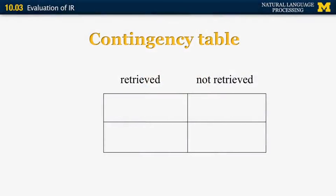Let me show you something called the contingency table, which is used very often in information retrieval evaluation and also in many other tasks, including question answering and summarization. The contingency table has four cells. In the first column, we represent the number of documents that were retrieved by the system given the query. In the second column, we show the documents that were not retrieved. The first row includes documents actually relevant to the query, and the second row the ones that are not relevant. The sum of all four cells equals the number of documents in the entire collection.